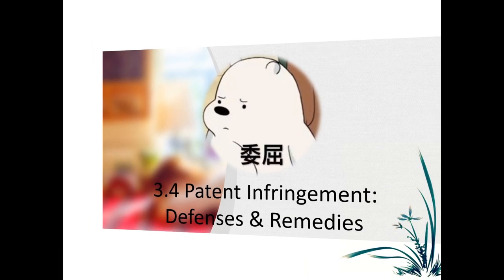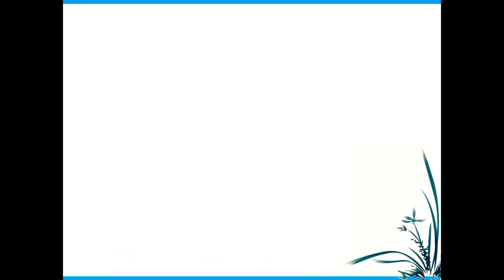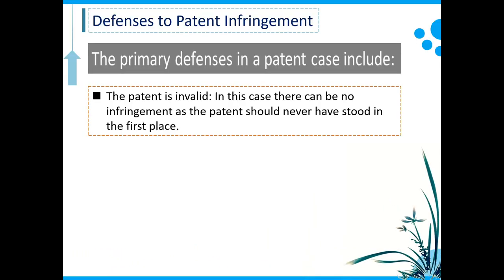The primary defenses in a patent case usually include, for instance, number one: the patent is invalid. In this case, the defendant is arguing that the patent at issue should never have stood in the first place. This patent owned by the patent owner was granted by the patent office by mistake. So the defendant is challenging the validity of the patent.